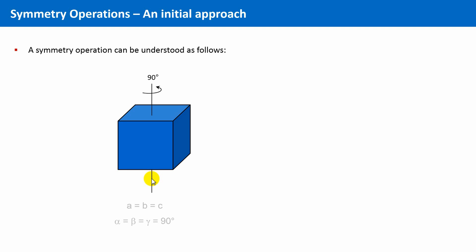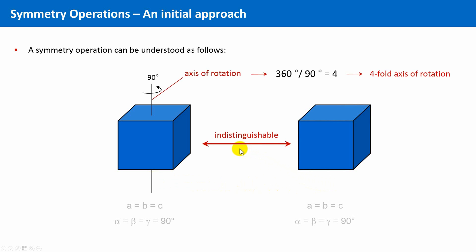If the operation, this transformation, is finished, then we are allowed to open our eyes again. And if we can't recognize that something was done to this object, then it was a symmetry operation. The final state of this cube is indistinguishable. Here we carried out a rotation by 90 degrees, and the respective symmetry element is a four-fold axis of rotation.